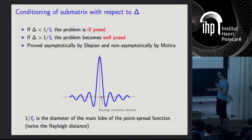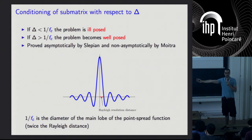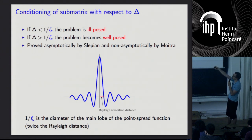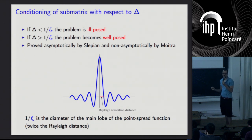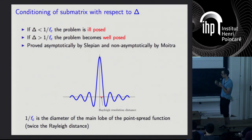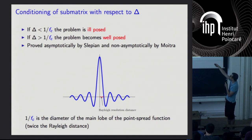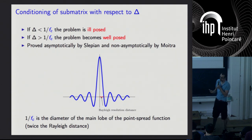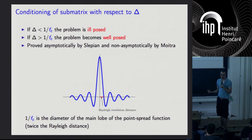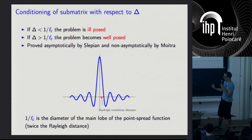If the minimum separation is below 1 over the cutoff frequency fc, the problem is ill-posed — there will be two sparse signals giving almost the same data. Above 1/fc, you're fine. This is not proved by us, but can be proved using Slepian's prolate spheroidal functions from the 60s, and recently Ankur Moitra from MIT has provided a non-asymptotic proof. This critical separation 1/fc is exactly the width of the sinc function. If the minimum separation is below that, we run into fundamental problems.